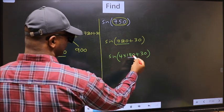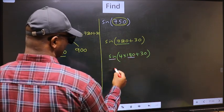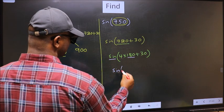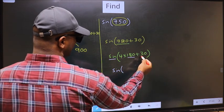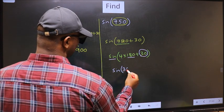Here we have 180. So sign is not going to change. It will remain sign. And inside, we get this angle: 30.